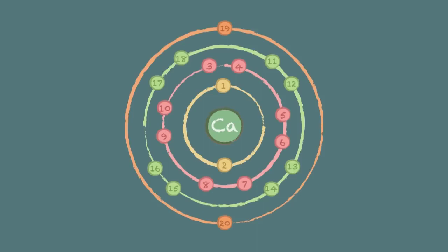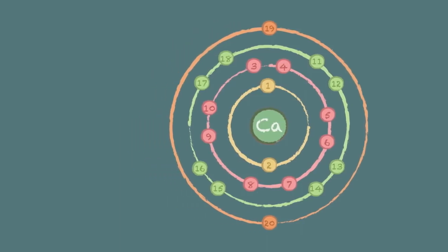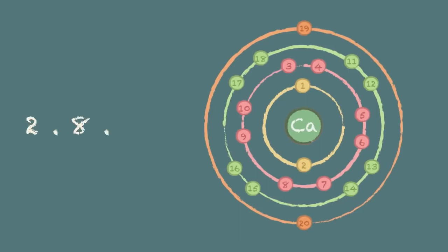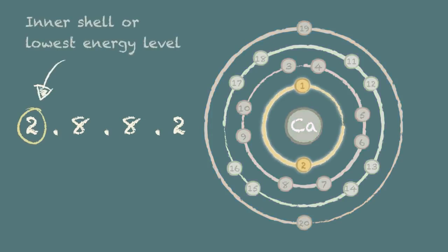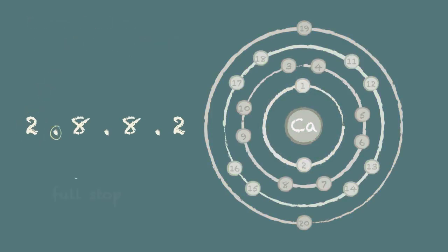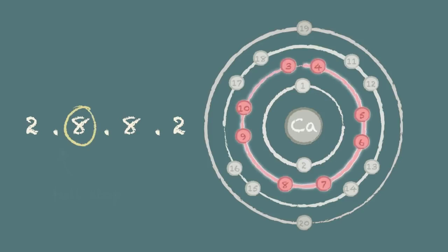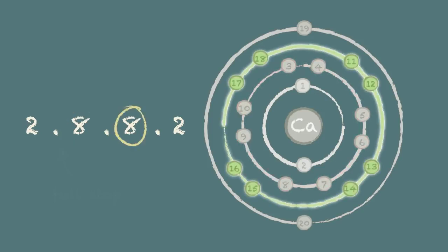And what's more there's a shorthand way of writing this down. 2, 8, 8, 2. The first number represents the inner shell or lowest energy level. The full stop shows how the electrons are separated between the shells. The second number tells us how many electrons are in the next shell followed by the third and fourth shells.